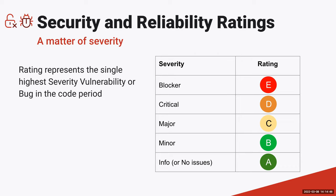The reliability and security ratings represent the single most severe bug or vulnerability in the associated code period. If you have one blocker bug, your reliability rating will be E; no blockers but one or more criticals gives D; no blockers, no criticals but one or more majors gives C, and so on. One developer introducing one blocker bug will immediately jump your reliability rating from A to E — it's like a big red warning sign for the team. You fix that blocker bug and the next scan drops the rating back down. These are calculated for both new code and overall code.